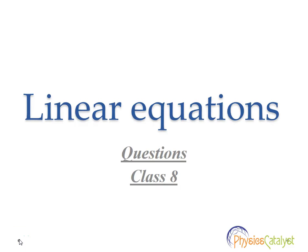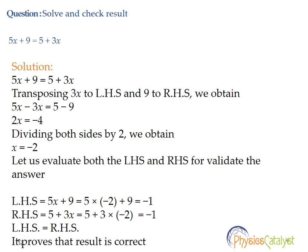Welcome students, this is Part 3 in the series on linear equations. We will be taking a look at some questions — solve and check the result for the linear equation: 5x + 9 = 5 + 3x. In this equation we have both a variable term and a constant term on both sides.